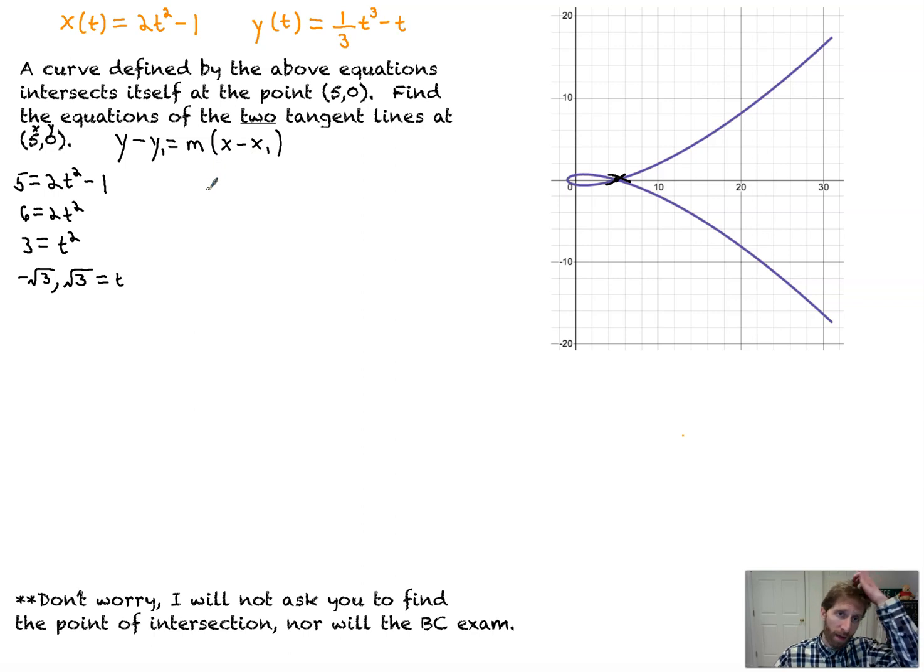The other thing I'm going to check, too, is if I plug in this t value into here, do I get out 0? If you check it, negative root 3 cubed minus root 3, and once you multiply by the 1/3, it does equal 0, the y value, and the same with positive root 3 as well. You can take my word for it, or you could try it out. It equals out to 0.